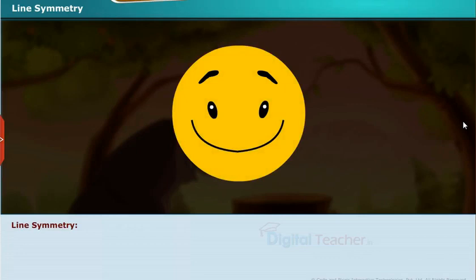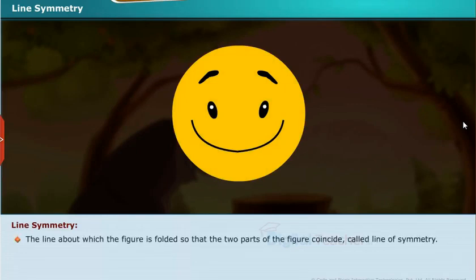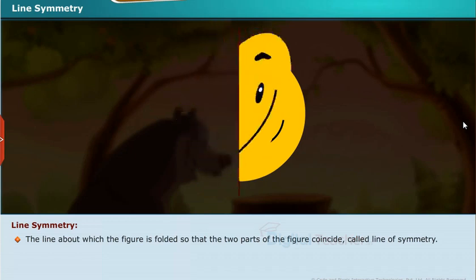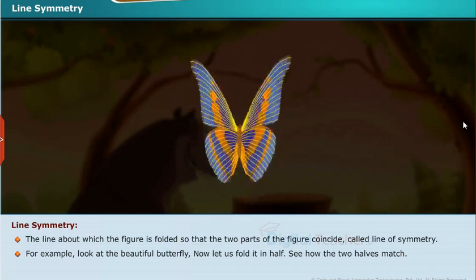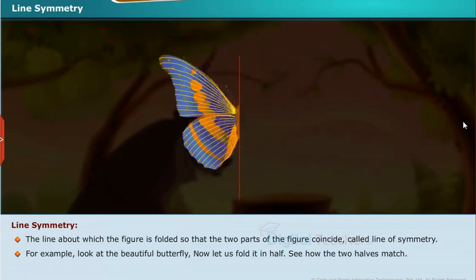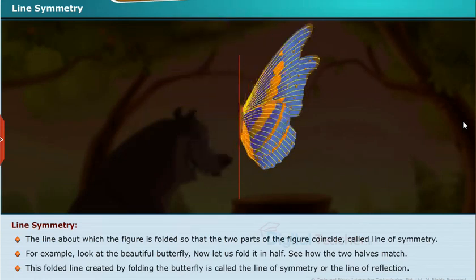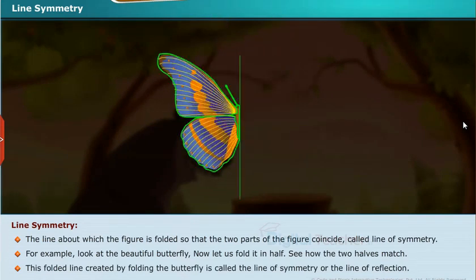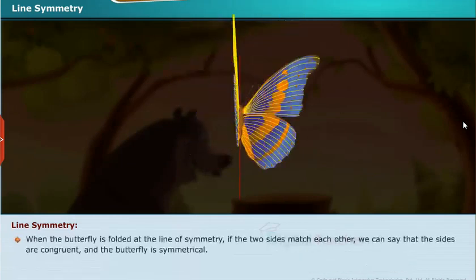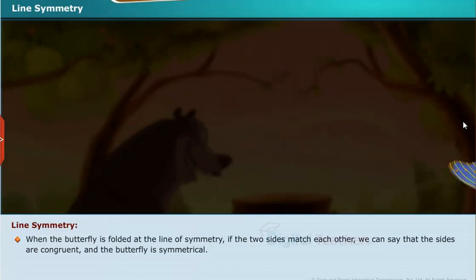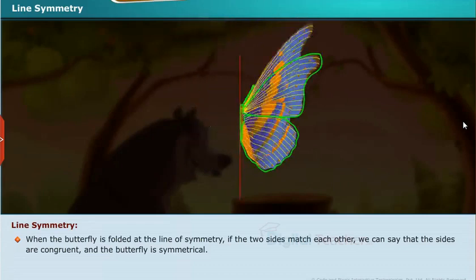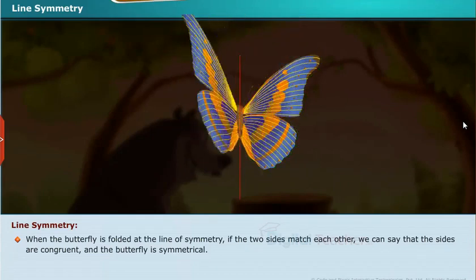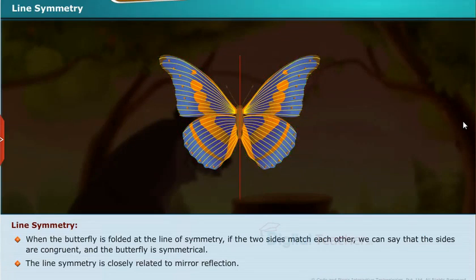The line about which the figure is folded so that the two parts of the figure coincide is called the line of symmetry. For example, look at the beautiful butterfly. Now let us fold it in half — see how the two halves match. This folded line is called the line of symmetry or the line of reflection. When the butterfly is folded at the line of symmetry, if the two sides match each other, we can say that the sides are congruent and the butterfly is symmetrical. Line symmetry is closely related to mirror reflection.